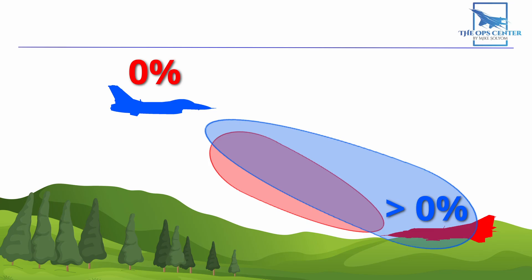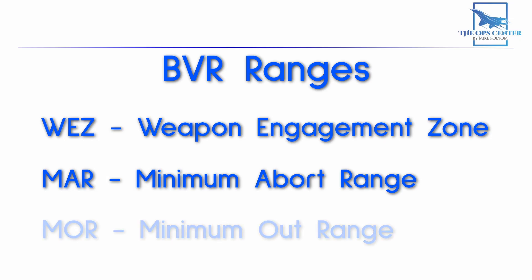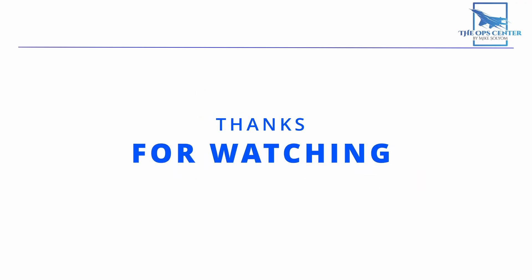So far in this video, we've gone over a few important ranges that you need to know to be successful in BVR combat. WEZ, MAR, and Minimum Outrange. When you know these ranges, you can develop a defensive battle plan. But they're also the foundation for an offensive BVR plan. That's going to be the subject of the next video. In that video, we'll go over how you can take these three ranges and turn them into that plan. I hope you'll come back to watch that, and as always, thanks for watching.